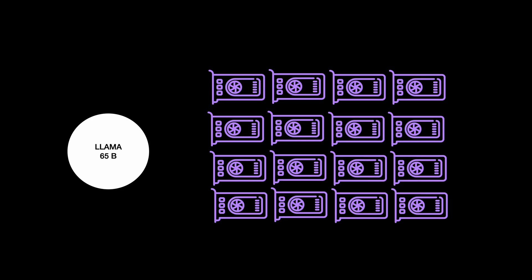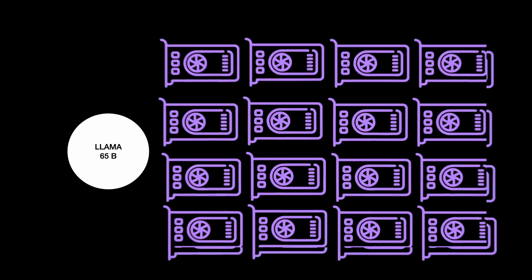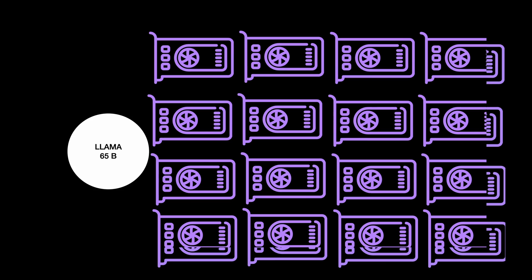For example, to fine-tune a Llama 65 billion parameter model, LoRa needs 780 GB of GPU memory. That's about 16 A40 GPUs. The answer to this problem lies with QLoRa, where Q stands for quantization.